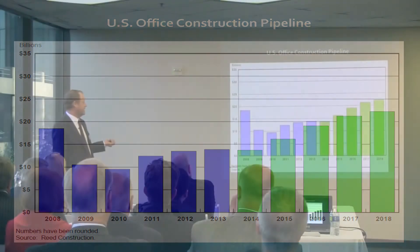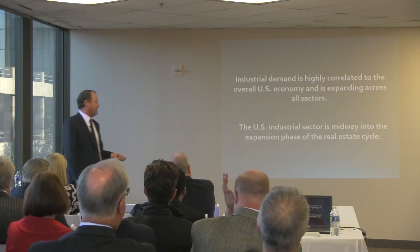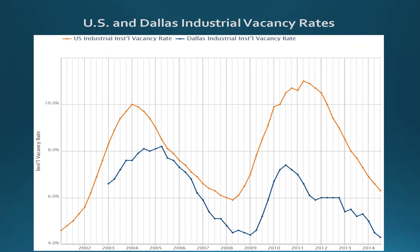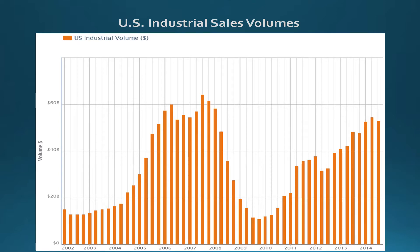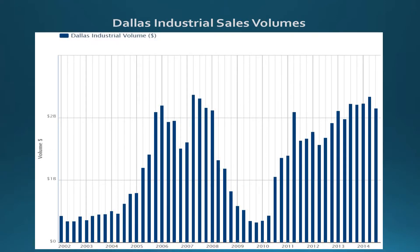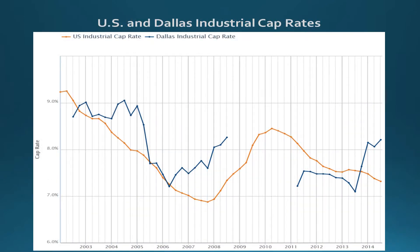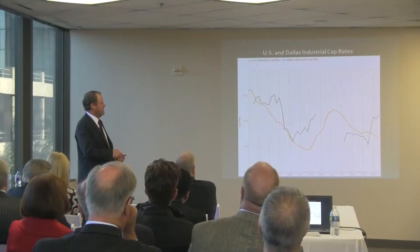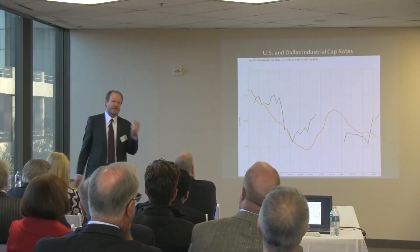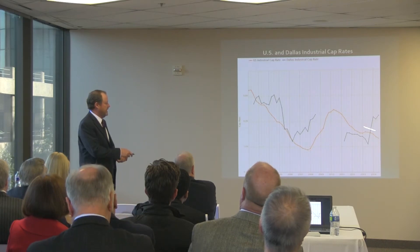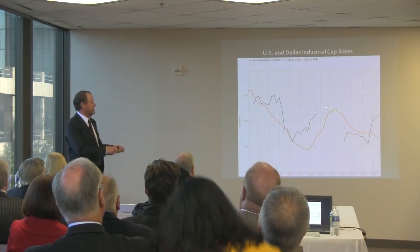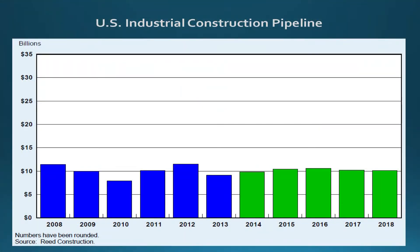Industrial demand is midway through the expansion phase and is the most highly correlated sector to the economy. Vacancy rates in the U.S. and Dallas-Fort Worth have come down rapidly. Sales volumes are almost at the prior peak levels — in Dallas-Fort Worth, essentially at the prior peak. Cap rates in Dallas industrial showed an unexpected increase; I would expect to see cap rate declines and price increases continuing. The construction pipeline is nothing out of control for now or in the near-term forecast — there's good discipline in the market.